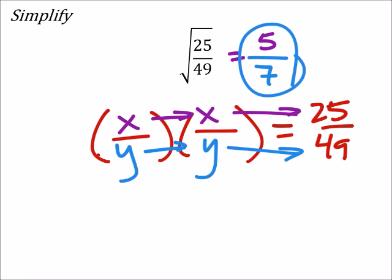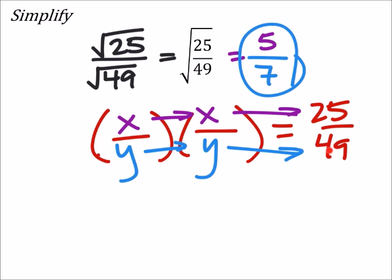So this is great because it illustrates what is really happening here. If we have the square root of a fraction, it allows us to take the square root of the numerator and divide it by the square root of the denominator, which is really what we did. Square root of 25 is five, square root of 49 is seven. Again, this is the basis of how it works.